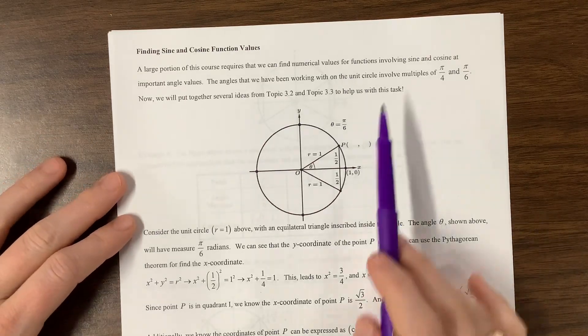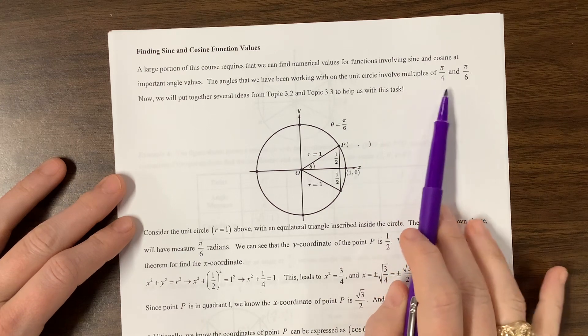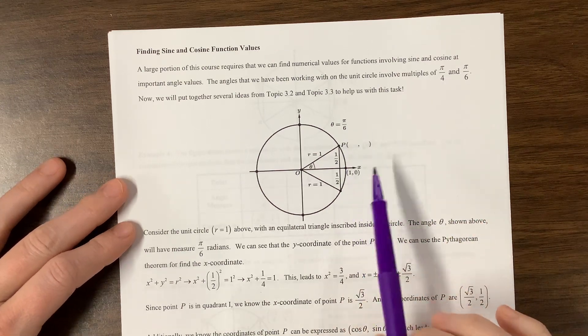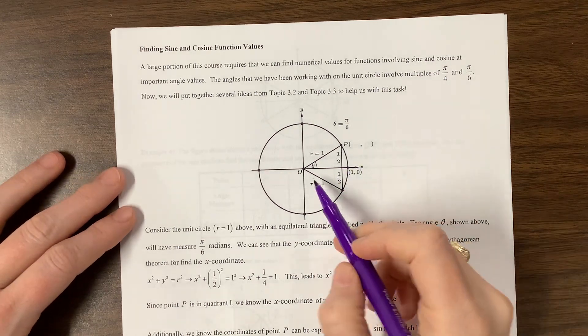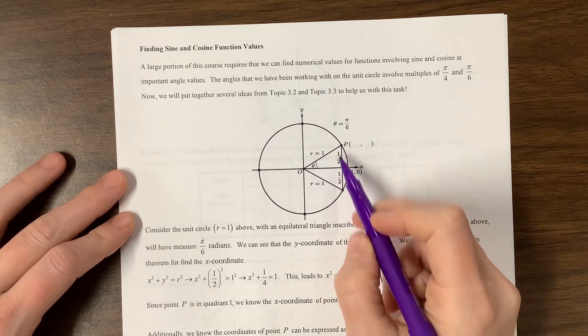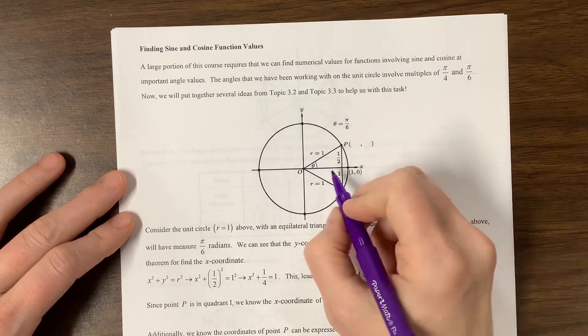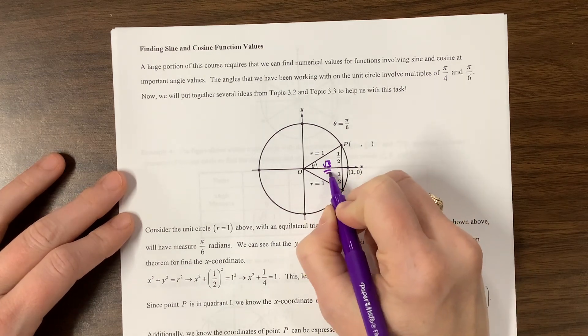So he continues here, and we're talking about multiples of pi over 4 and pi over 6. So what we find, let's see, we're looking at, we've got a radius of 1, we've got this height of 1 half. The missing side will be root 3 over 2.